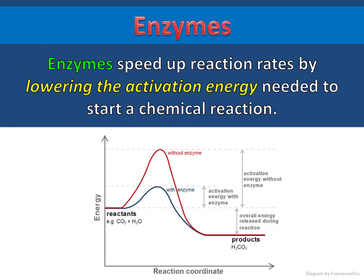Enzymes speed up reaction rates by lowering the activation energy needed to start a chemical reaction. You can see here that with the enzyme it requires much less energy than without the enzyme. Because it can get started with less energy, it will happen more quickly.